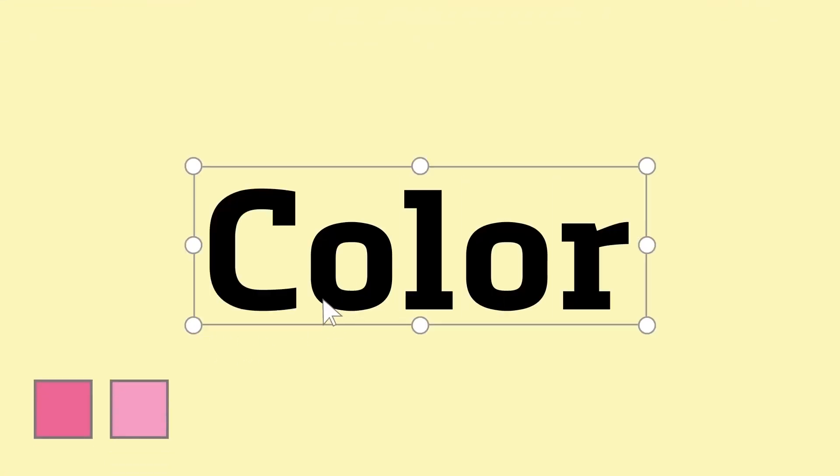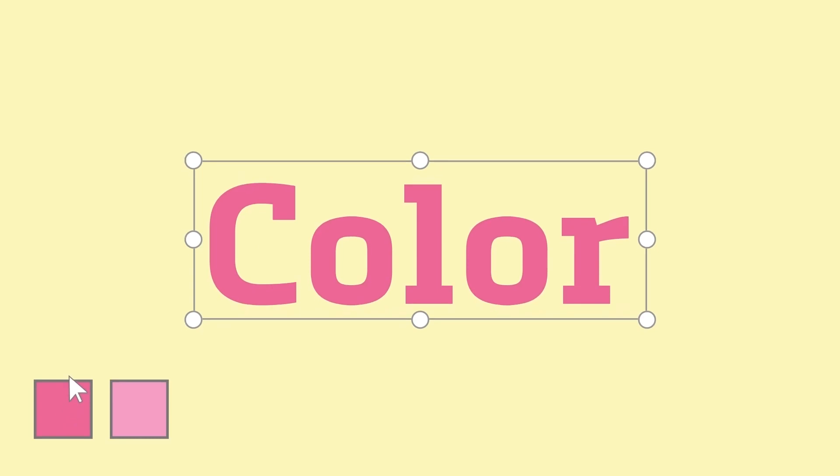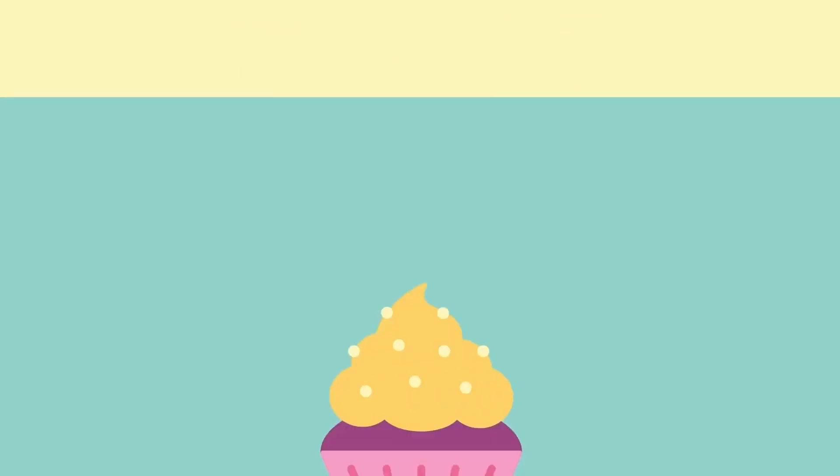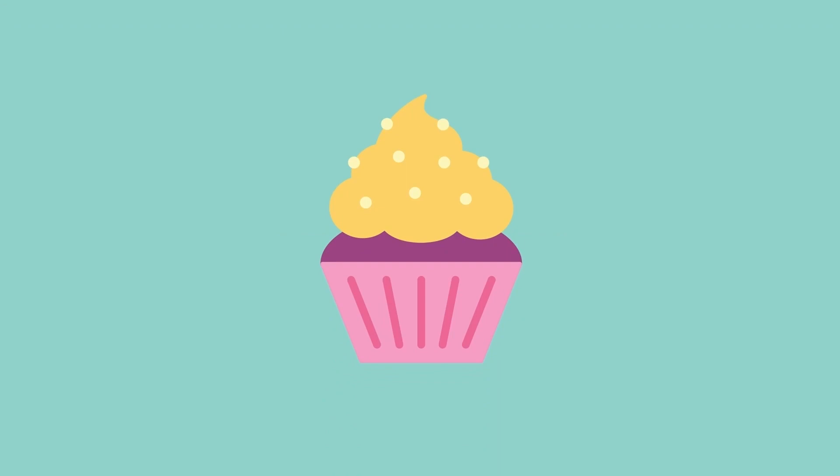Color probably isn't something new to you. You've probably changed the color of text before, or added a border to a shape in some other app. You can do both of these in Illustrator, and we even have special terms for them. Fill is the color inside of text or a shape, and stroke is the border around it.